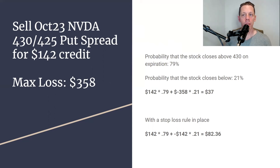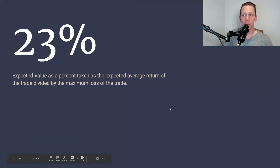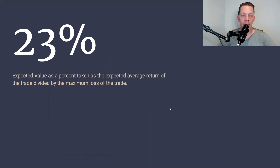You're risking a total of $358 on each trade, so that's a 23% expected return. By adding the stop-loss, we increased our expected return by 130% — from 10% to 23%.